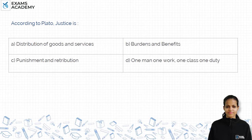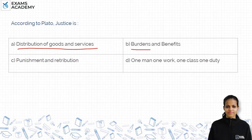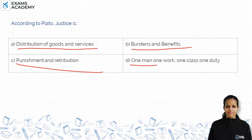The question is: according to Plato, justice is (a) a distribution of goods and services, (b) burdens and benefits, (c) punishment and retribution, or (d) one man, one work, one class, one duty.